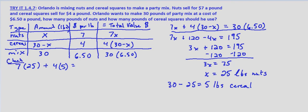So 7 times 25 is 175. 4 times 5 is 20, which equals 195. And we've verified 30 times 6.50 is 195, so this checks.